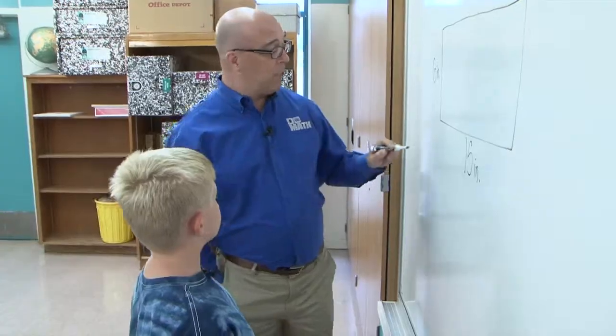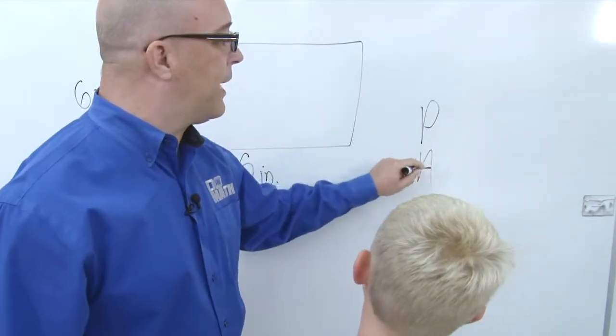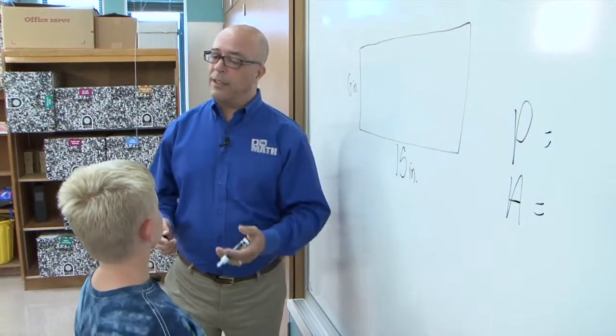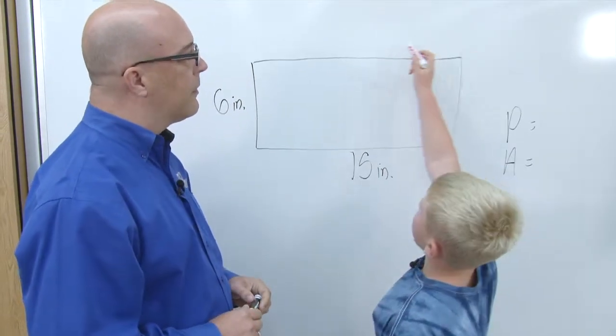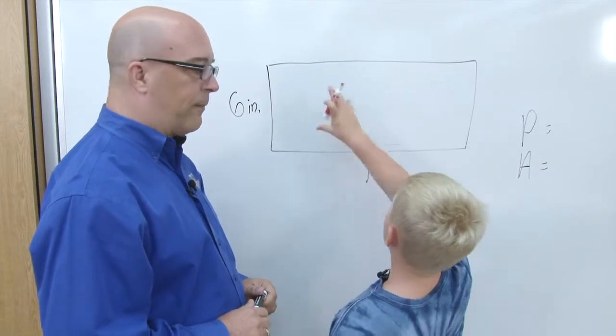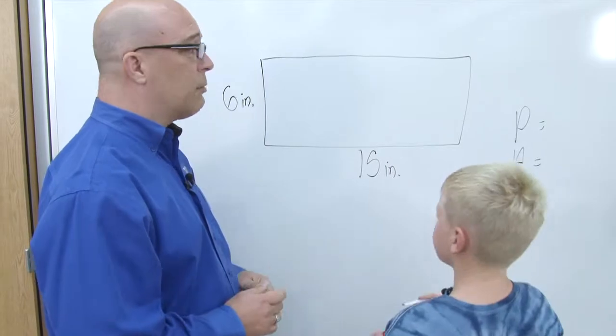Now what I'd like to do is I'd like to figure out what the perimeter is and what the area is. But before we do that, can you explain a little bit about the difference between perimeter and area? Well, the perimeter is around the outside and the area is all that's in the inside of the rectangle. Perfect.